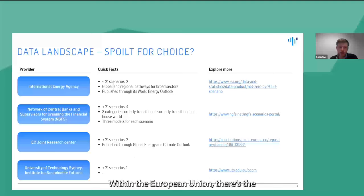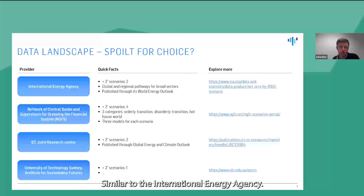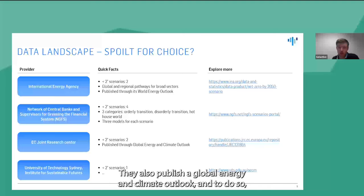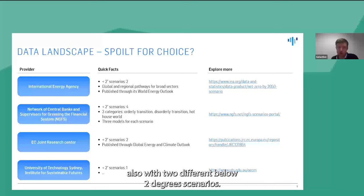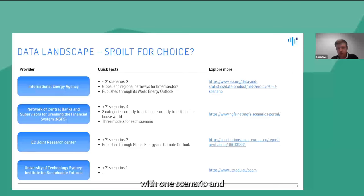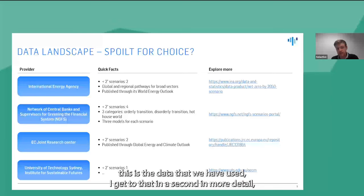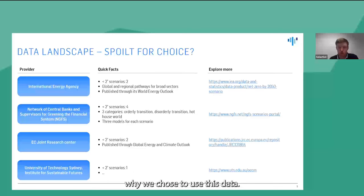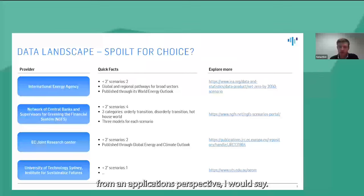Within the European Union, there's the Joint Research Center located within the Commission. Similar to the IEA, they publish a Global Energy and Climate Outlook, and to do so they have developed a model of their own, also with two different below-two-degree scenarios. And last but not least, we have the University of Technology Sydney, namely the Institute for Sustainable Futures, with one scenario. This is the data that we have used, and I'll get to why we chose it in more detail shortly.